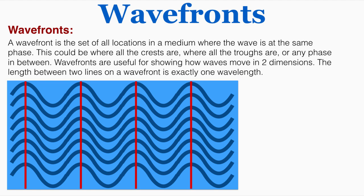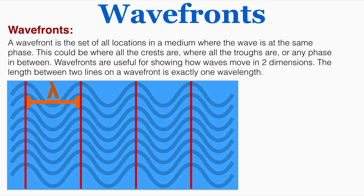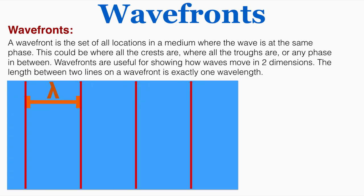The distance between two lines on a wavefront is one wavelength. This is what the wavefront would look like by itself if you encountered it in a problem or a test — just these lines. At each line, that's where the same phase of the wave occurs, so the distance between those two lines is one wavelength.